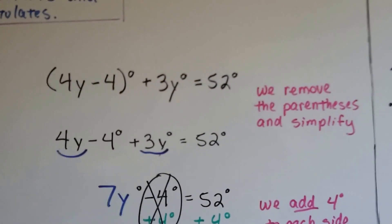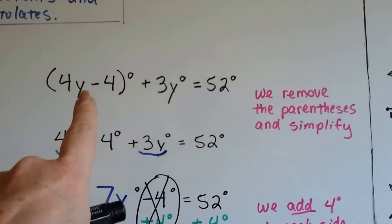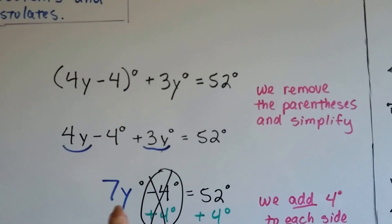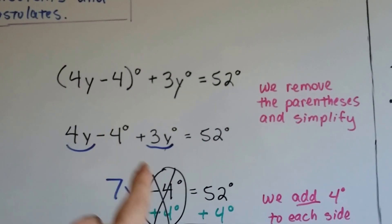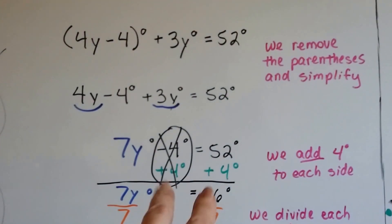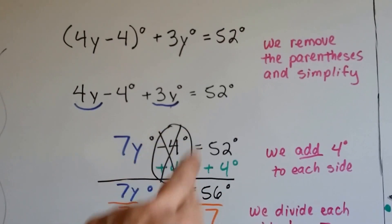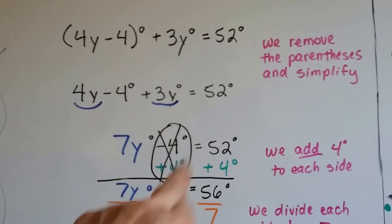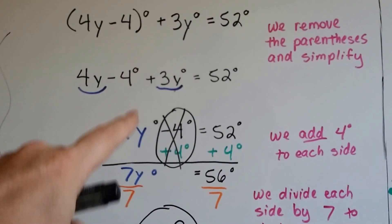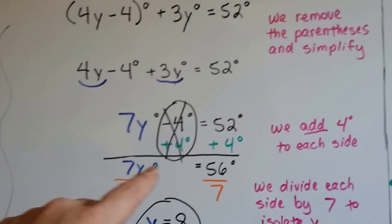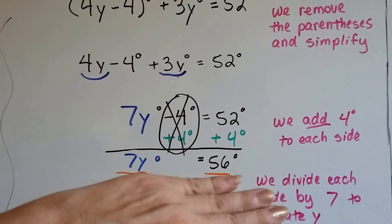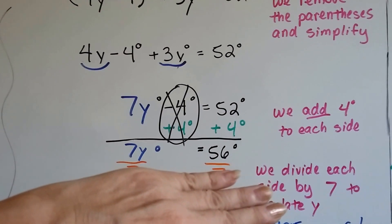The first thing we're going to do is remove the parentheses and simplify. And we see we have 4y and 3y. And when we put them together, we get 7y. We drop down the negative 4 and the 52. So we add 4 to each side, and that creates our friend, our zero pair here. It gets rid of the negative 4 because we added 4 to both sides. So the 7y drops down. We've got 7y degrees is equal to 56 degrees.